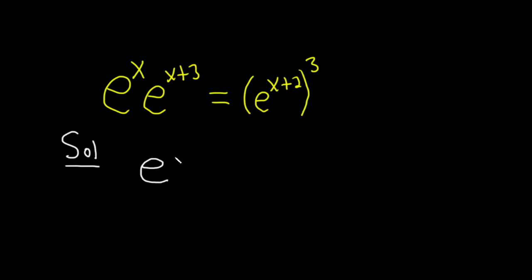So we have e, and then x plus x plus 3. Well, x plus x is 2x, and then we just have the plus 3, because we add the exponents.